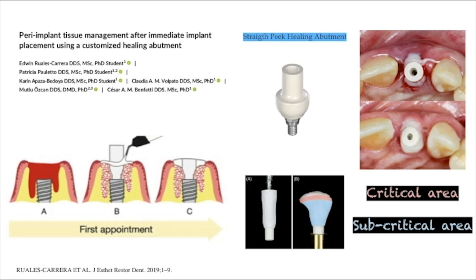This paper shows that after immediate implant placement, as the primary stability was too low to make a provisional restoration, it was decided to fill the gap properly. A customized healing abutment was made using a straight peak abutment and applying around the healing a small amount of flowable resin, creating a subcritical area and a critical area at the straight peak healing abutment to give back the natural contour of soft tissue.